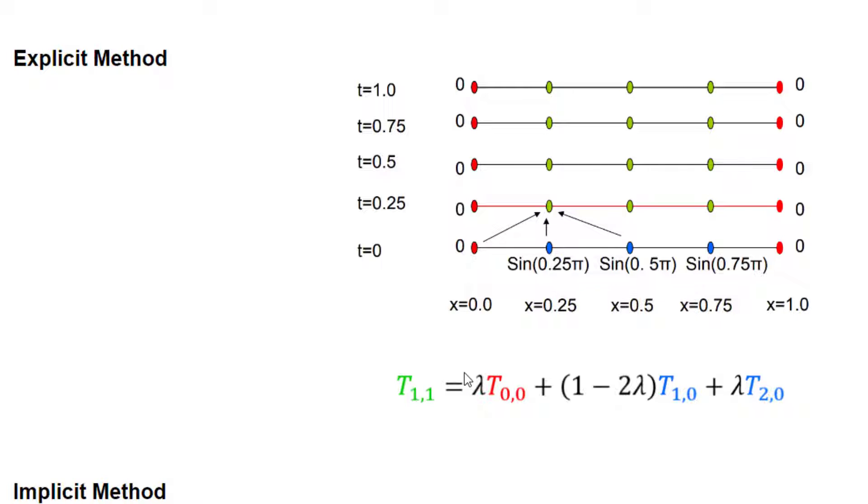The equation for this is shown here. This is an explicit equation so you can solve for the unknown value which is the green one using the boundary condition value, the boundary value and the initial condition values.